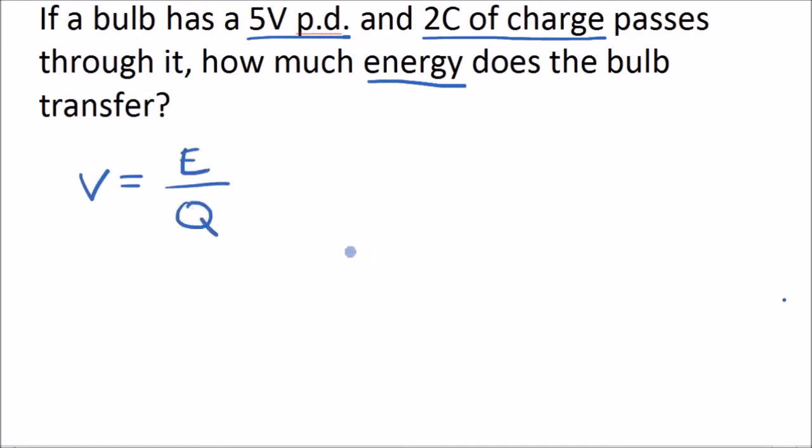Okay. But we want to know the energy, so we're going to have to rearrange this. And it will have to look something like this. So energy transferred is equal to the potential difference multiplied by the charge. So this is simple, isn't it?